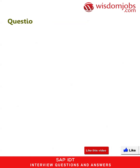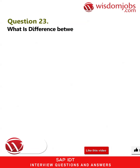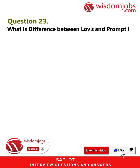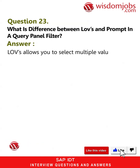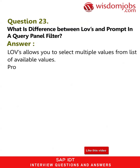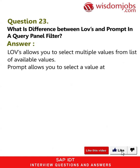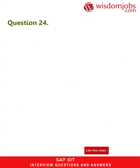Question 23: What is the difference between LOV and prompt in a query panel filter? Answer: LOV allows you to select multiple values from a list of available values. Prompt allows you to select a value at run time.